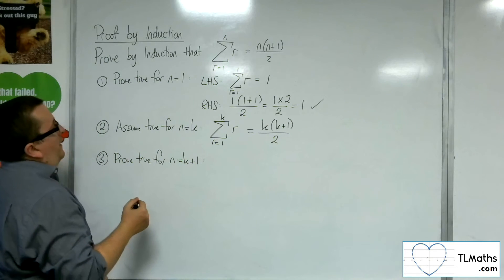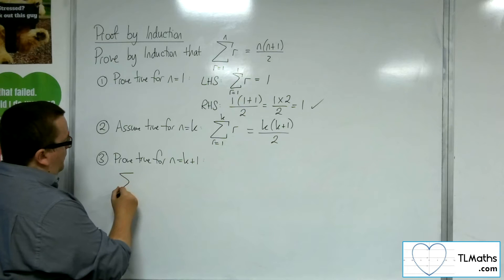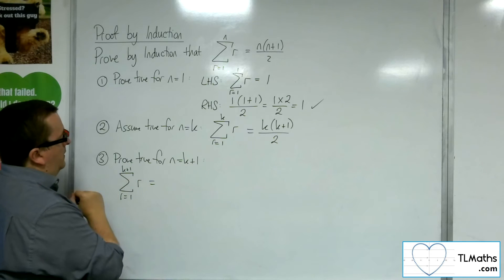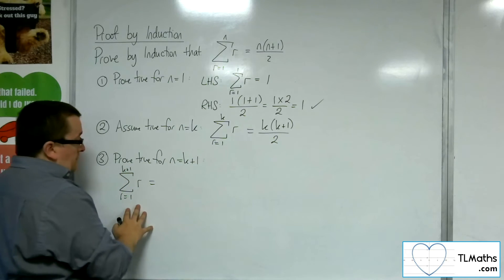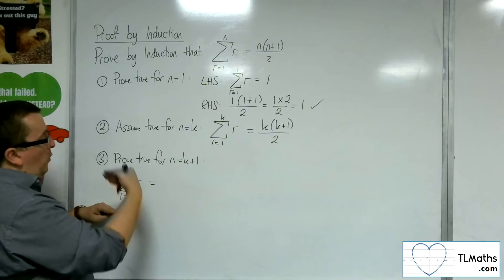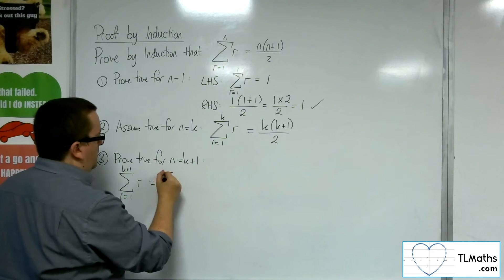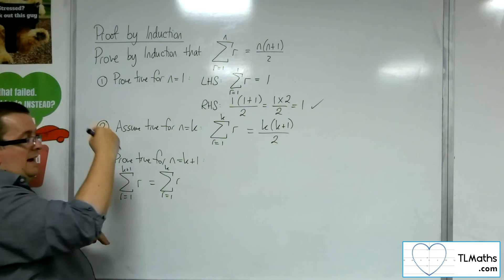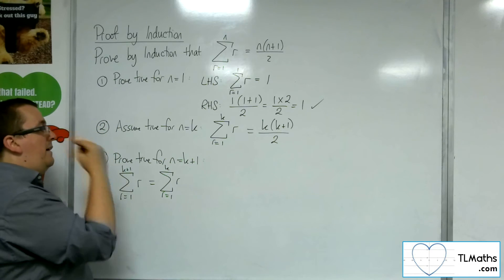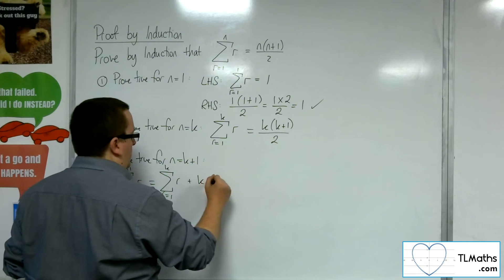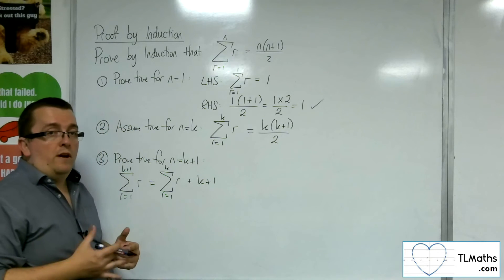So how do we go about that? Well, we're going to need to write down the sigma from r is 1 up to k plus 1. Now with series like that, this is the same as me writing, adding up the 1 all the way up to k. So from 1 all the way up to k, and then I've got that final term where I have k plus 1 substituted into the r.